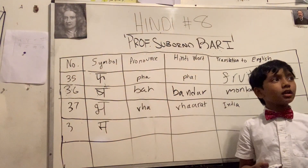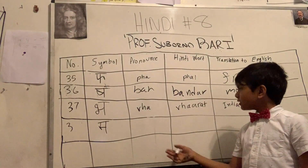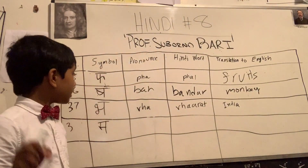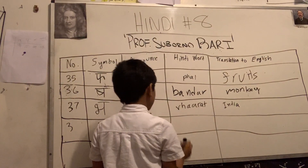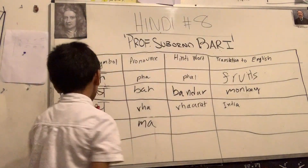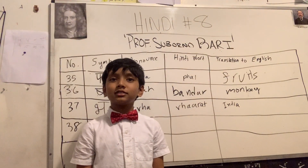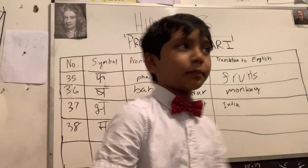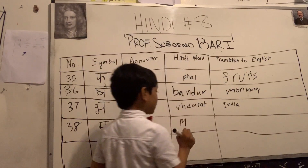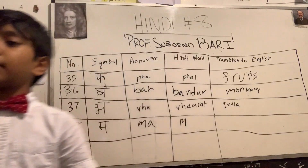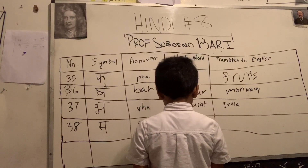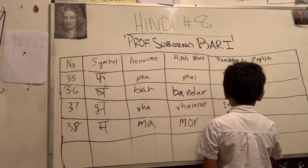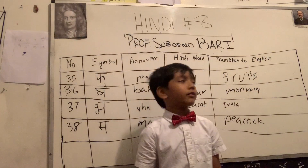I just want you guys to guess — what do you think this is supposed to be? Student guesses 'Shaw,' then 'Mo,' then 'Ma.' The professor confirms: Ma. Ma for more, actually — not mama, but 'mor.' Mor is that cutie neighbor — the beautiful bird that is a peacock.